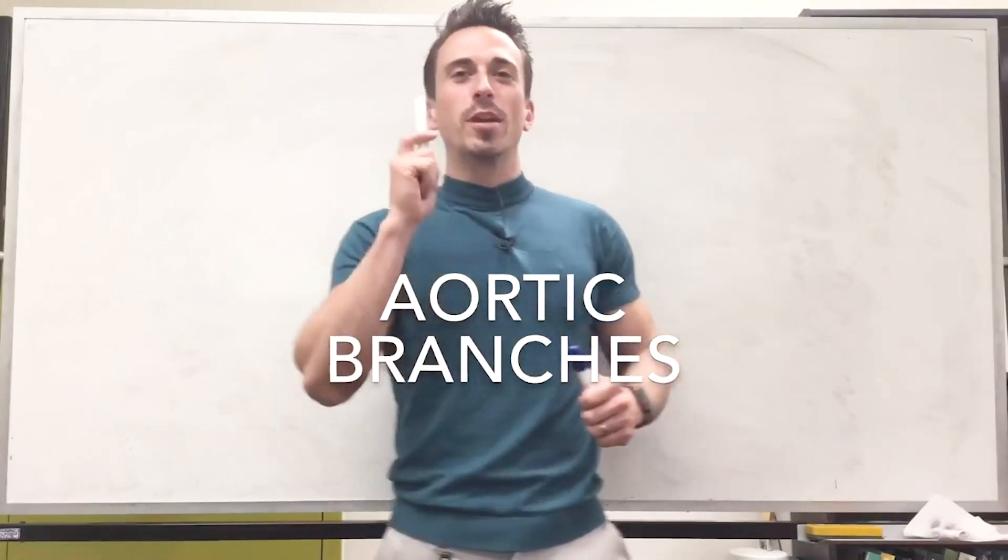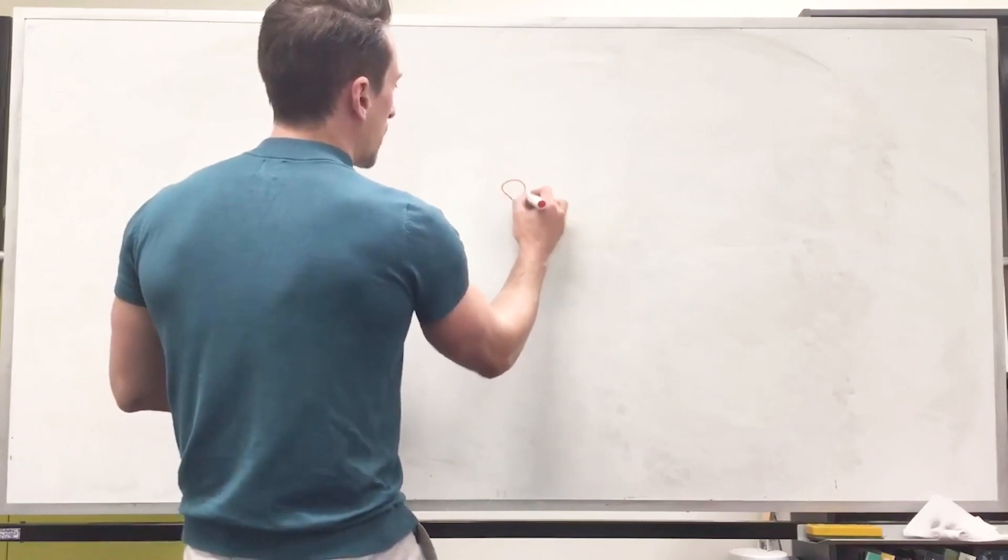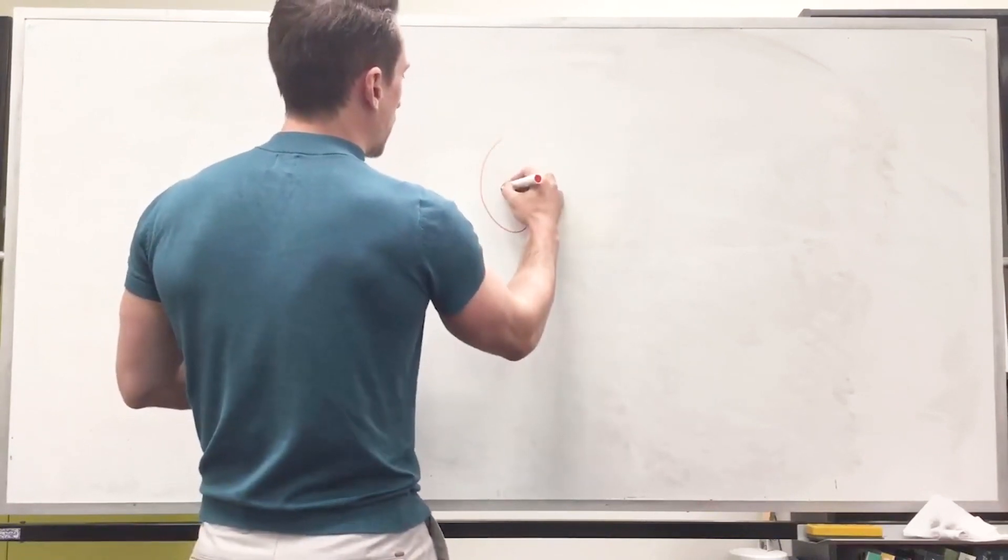Dr. Mike here. In this video, we're going to look at the aortic branches. What is the aorta? The aorta is that large vessel that exits from the left-hand side of the heart, that left ventricle.